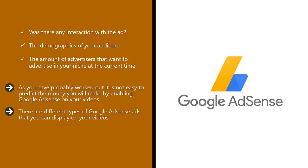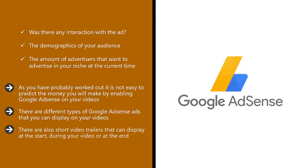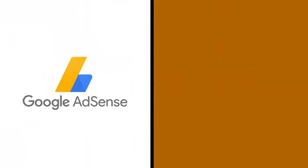There are different types of Google AdSense ads you can display on your videos. One of the most common is a standard banner displaying at the bottom of the video. There are also short video trailers that can display at the start, during your video, or at the end. Sometimes the viewer can skip these trailers and other times they will have to watch them.